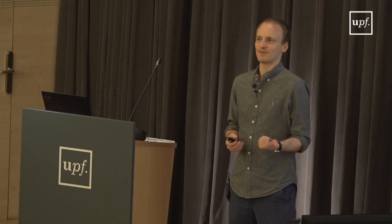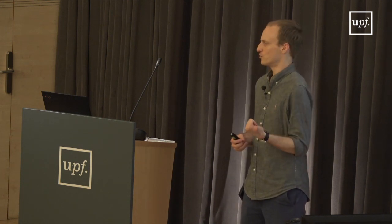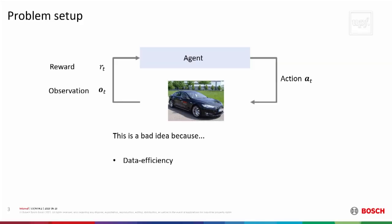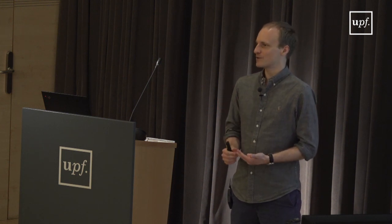The first reason is data efficiency. If we have a real system, we do not want to collect so much data on it — collecting data on a real system is really, really expensive. The second reason it's a bad idea is that a lot of RL relies on random exploration — Gaussian policies, adding noise — that's just usually not a good idea on a real system. The third reason is that reinforcement learning by design